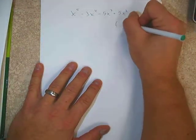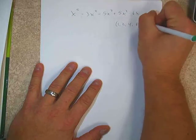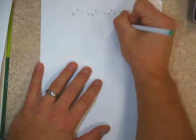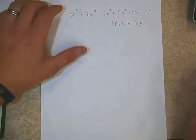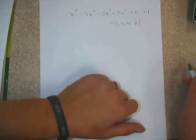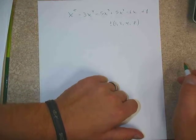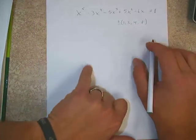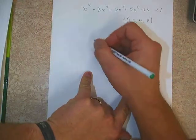I'm going to have my p's which are going to be 1, 2, 4, and 8. I know that the leading coefficient is 1, so we're not going to get any fractions here. We don't have to divide those by anything because 1 is going to be on the bottom. With that said, let's go ahead and set up our synthetic division.